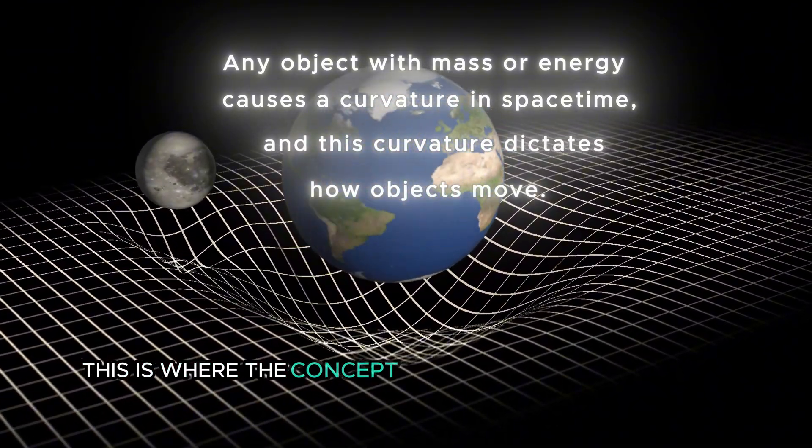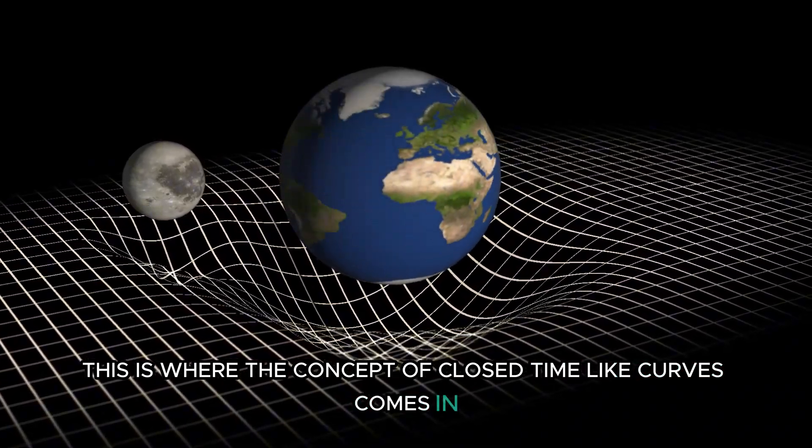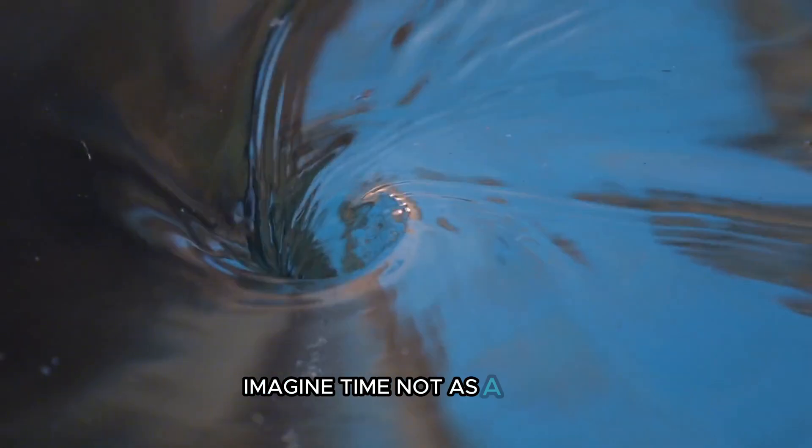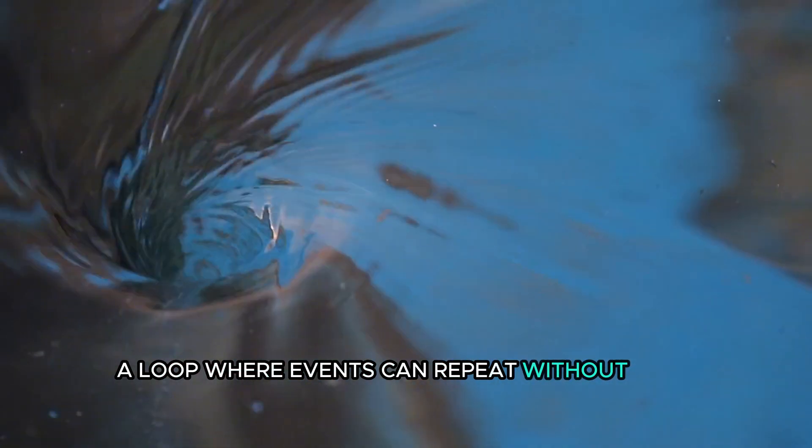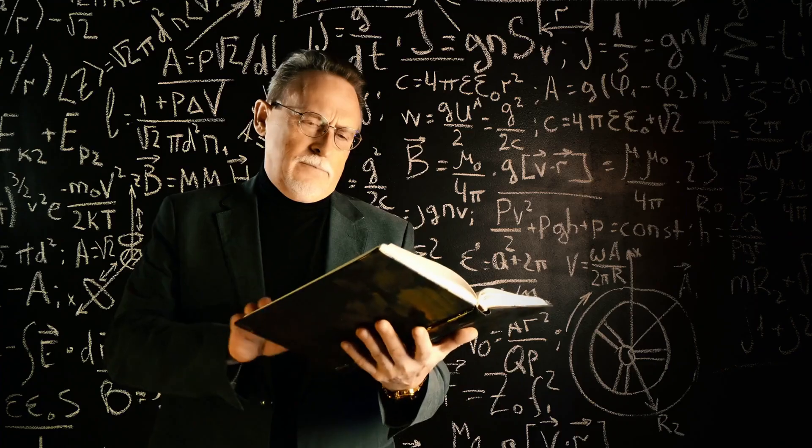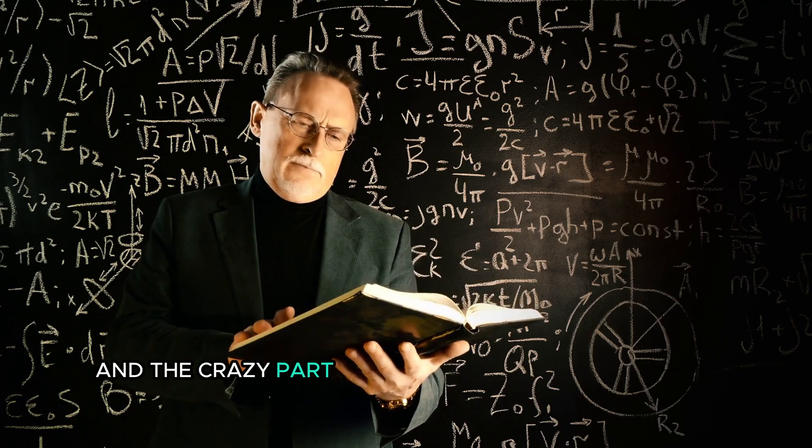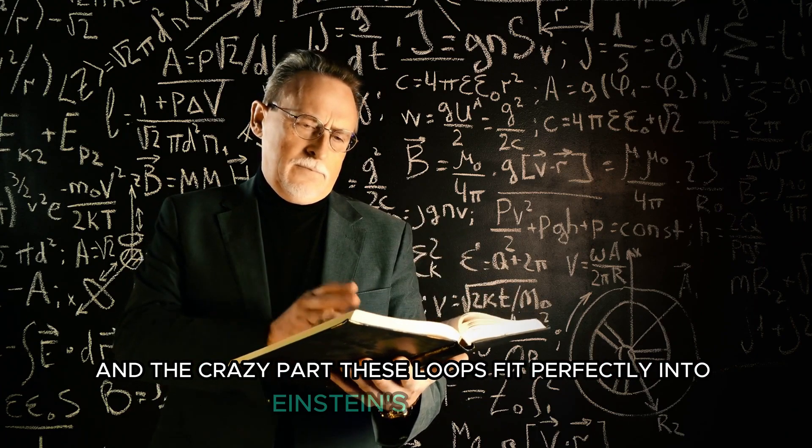This is where the concept of closed time-like curves comes in. Imagine time not as a river, but as a whirlpool. A loop where events can repeat without ever having a clear beginning. And the crazy part? These loops fit perfectly into Einstein's equations.